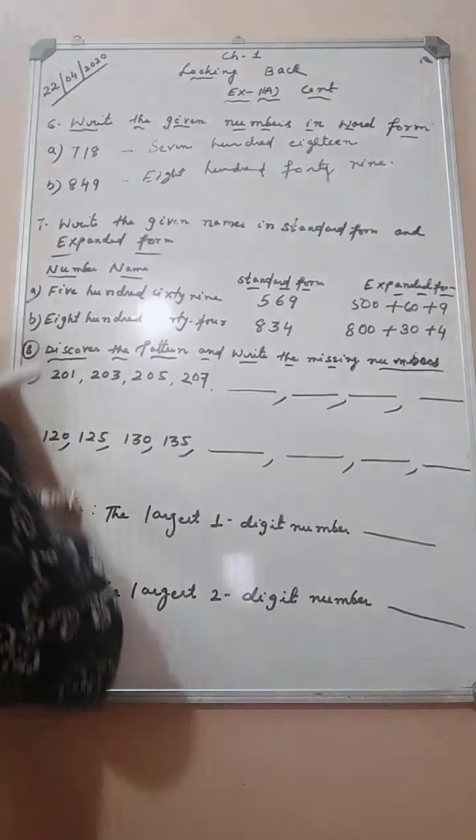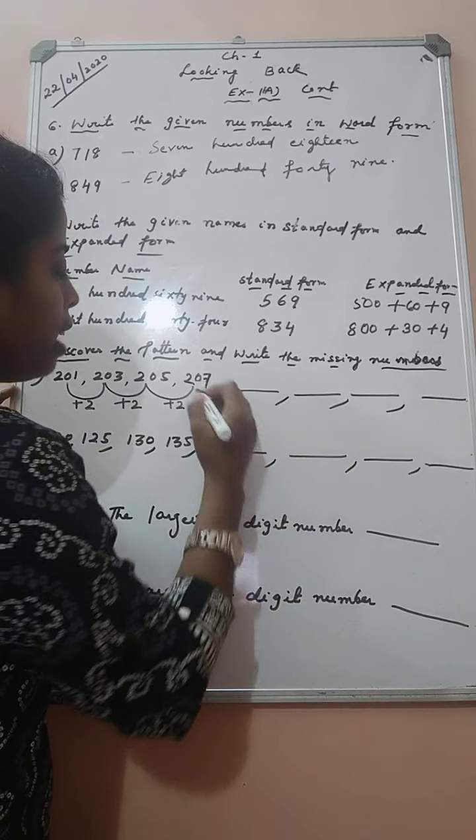201, when we added 2, it became 203. When we added 2 again, 205. When we added 2, it became 207. So our sequence is, we have to add 2 and find the numbers.